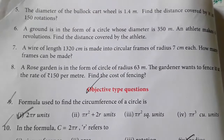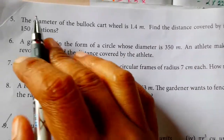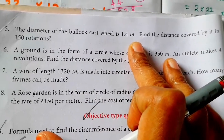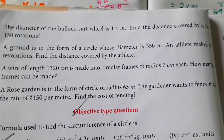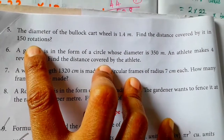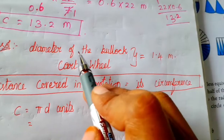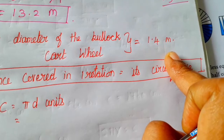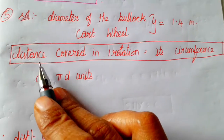Hi, my dear students, welcome back to our innovation. Problem 5: the diameter of the bullock cart wheel is 1.4 meter. Find the distance covered by it in 150 rotations. Solution: diameter of the bullock cart wheel is equal to 1.4 meter. Distance covered by 150 rotations — first find the distance covered in 1 rotation.